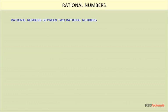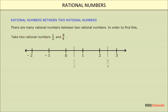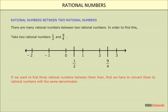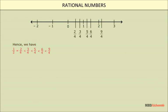Rational numbers between two rational numbers: there are many rational numbers between any two rational numbers. For example, to find three rational numbers between 1/2 and 9/4, first convert them to the same denominator. The LCM of 2 and 4 is 4, so 1/2 = 2/4. We then have 2/4 < 3/4 < 5/4 < 6/4 < 9/4. Thus, 3/4, 5/4, and 6/4 are three rational numbers between 1/2 and 9/4.